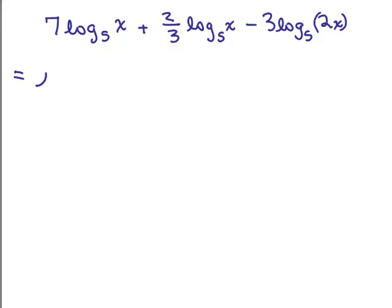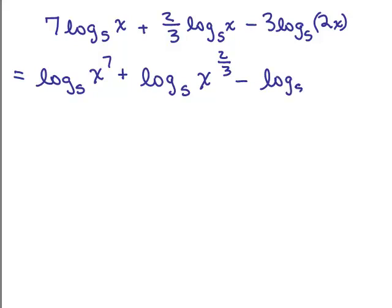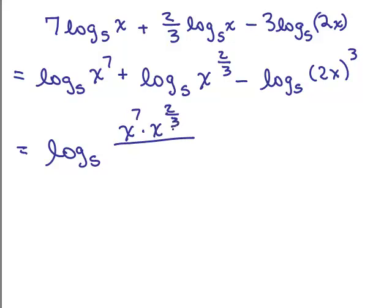All right, we're going to write this as a single log. So let's begin by putting the exponents on each of these. So we've got log₅(x⁷) + log₅(x^(2/3)) - log₅((2x)³). Now I'm going to use my quotient and product rules here. So these first two which are added is the same thing as log₅(x⁷ · x^(2/3)). That will be the numerator. And in the denominator, I'm going to have the (2x)³, which if we simplify that, that would be 8x³.